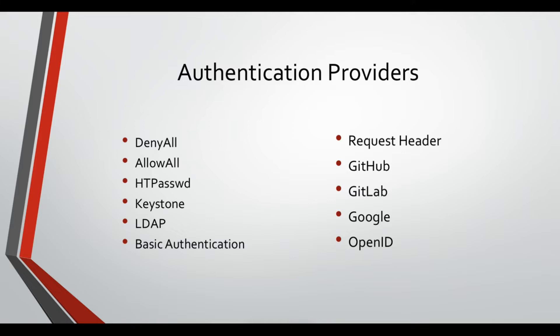You have the request header - in this authentication provider you will be authenticating users based on a specific header in their requests. This has to be combined with another provider which will actually add this header to users' requests. You can also authenticate users based on their GitHub account, GitLab account - both are Git servers - and you can use a Google account. For all of the last four options you have to obtain the token and talk to the APIs related to these providers.